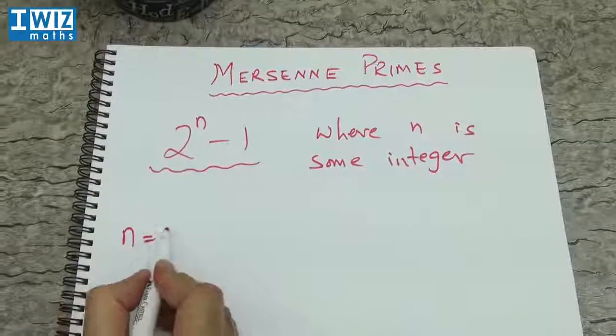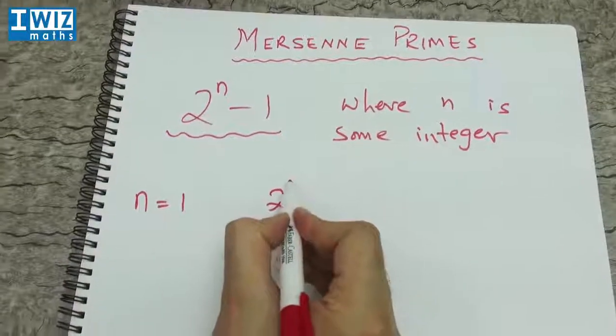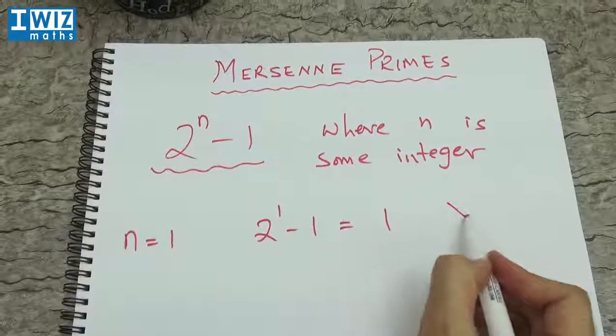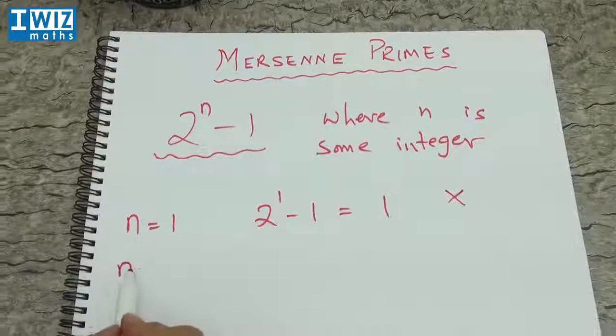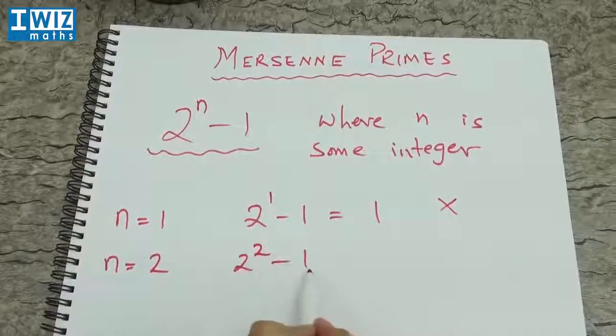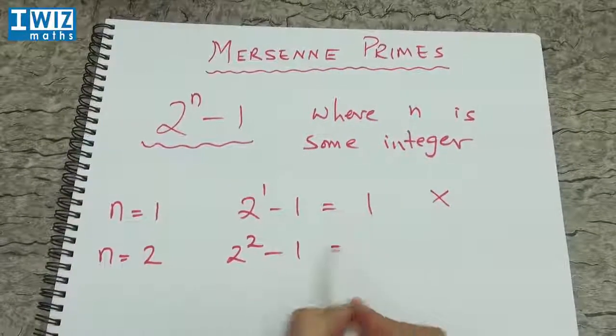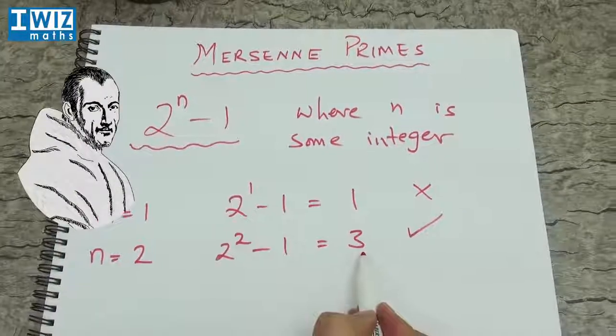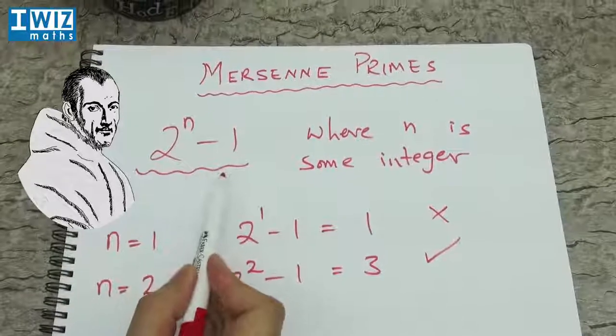So let's consider n is equal to 1. We will get 2 to the 1 minus 1, which is just simply 1, which is not a prime number. So with n is equal to 2, we get 2 to the 2 minus 1, which is 4 minus 1, which gives us 3, which is a prime number. So 3 is a prime number and it also follows the structure.